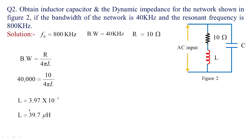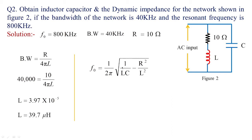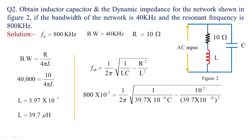Once we obtain the value of L, we calculate the value of C. The resonant frequency for the parallel combination is 1 divided by 2π times the square root of 1/LC minus R²/L². Substituting the values: resonant frequency is 800×10³, L is 39.7×10⁻⁶, R is 10, giving us 10² divided by 39.7×10⁻⁶. This is a squared term under the square root.